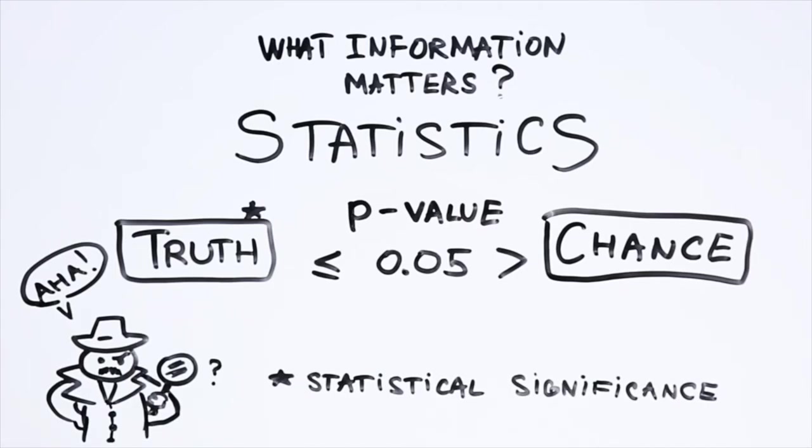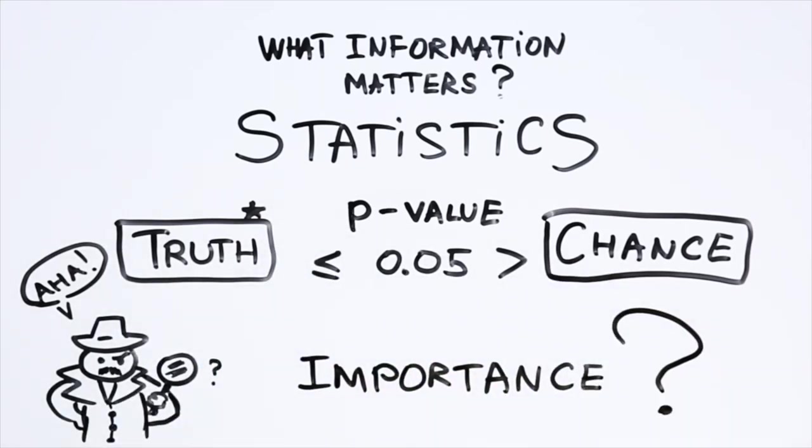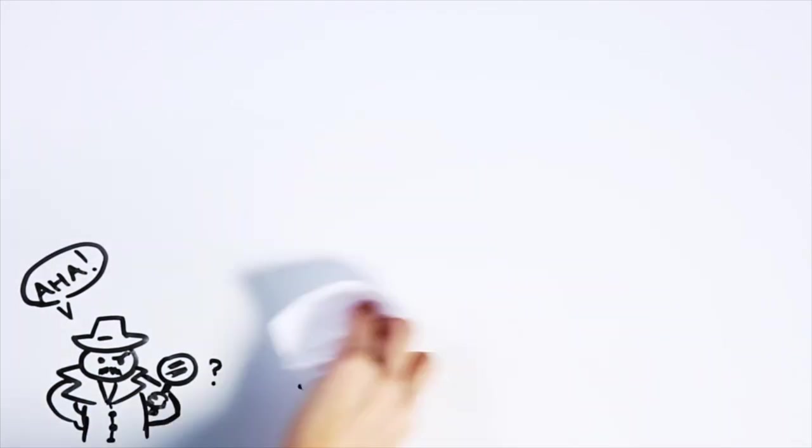However, the p-value only helps you get a sense of whether study outcomes are due to chance or not. It does not help us examine how strong the association is or how important the health implications are. And if statistics aren't done well, even low p-values can be misleading.